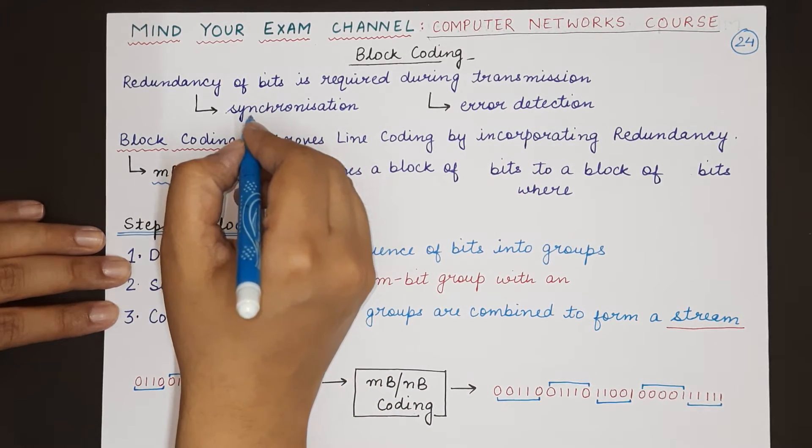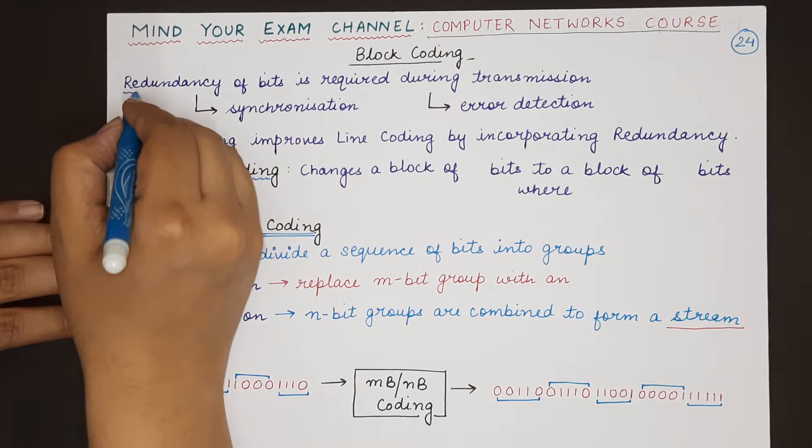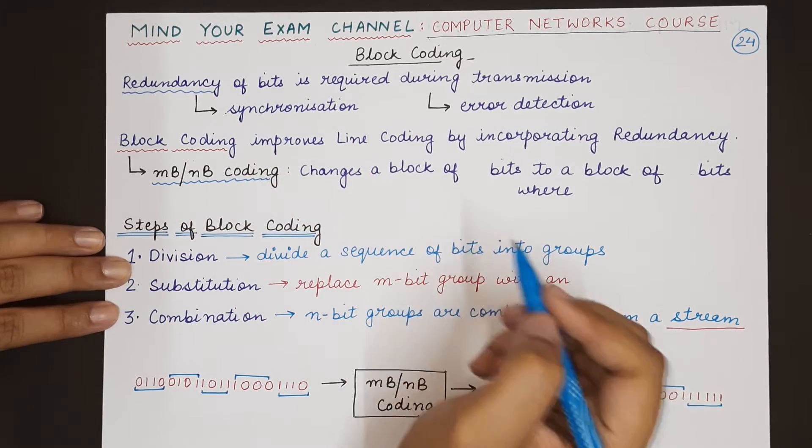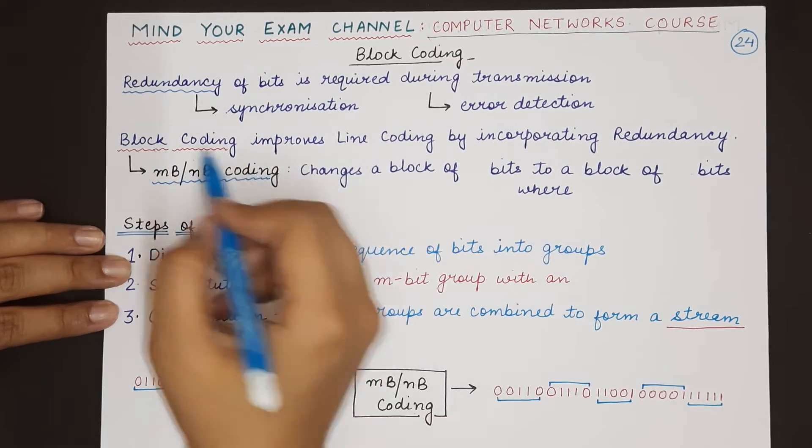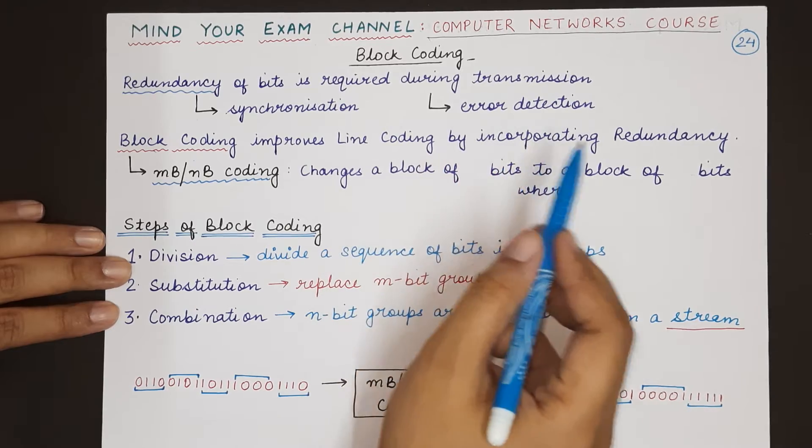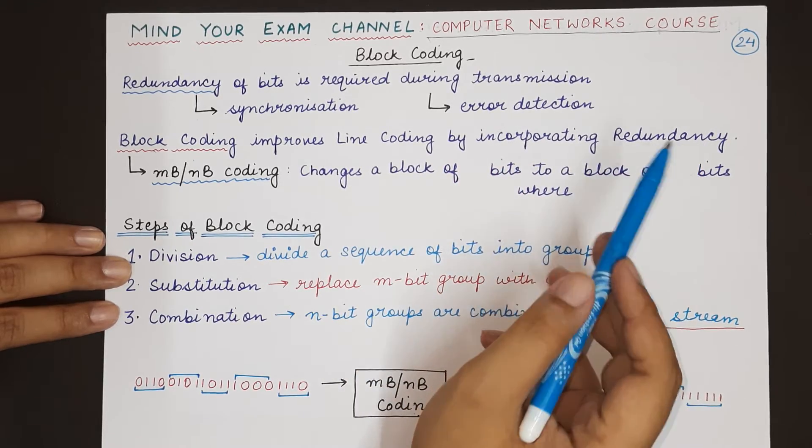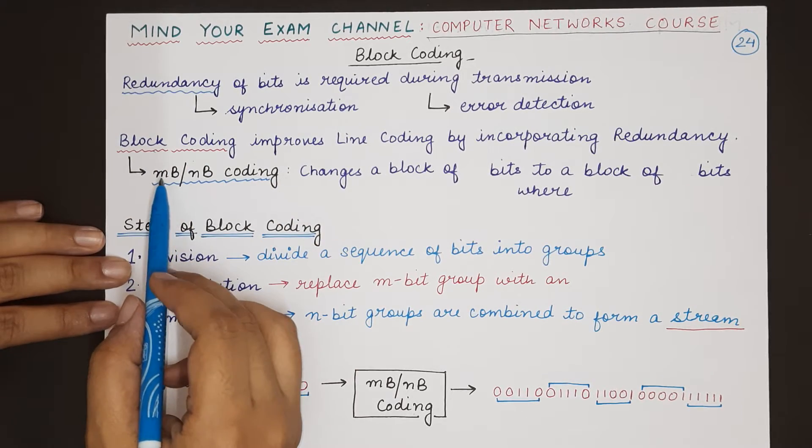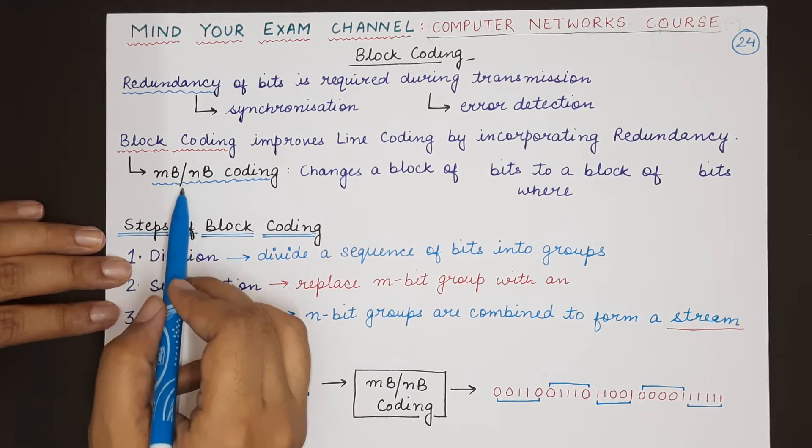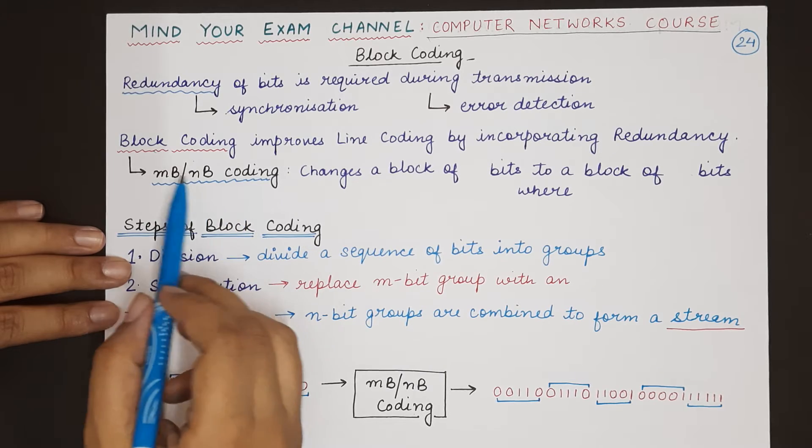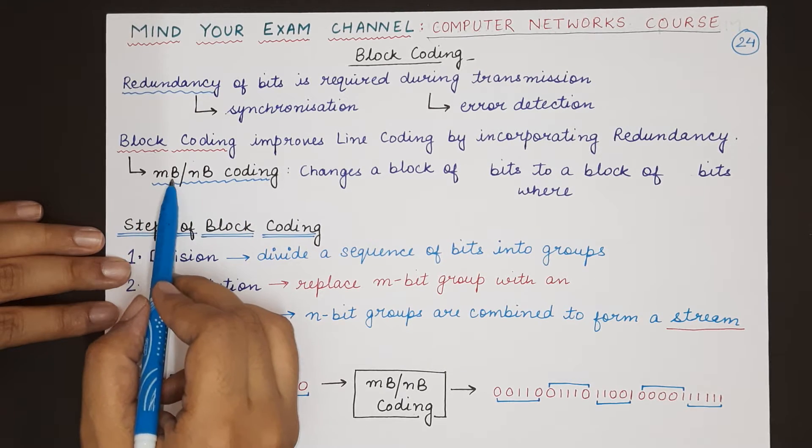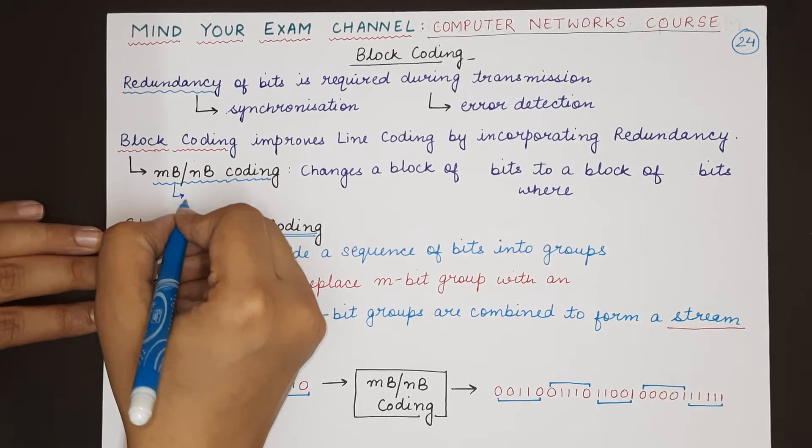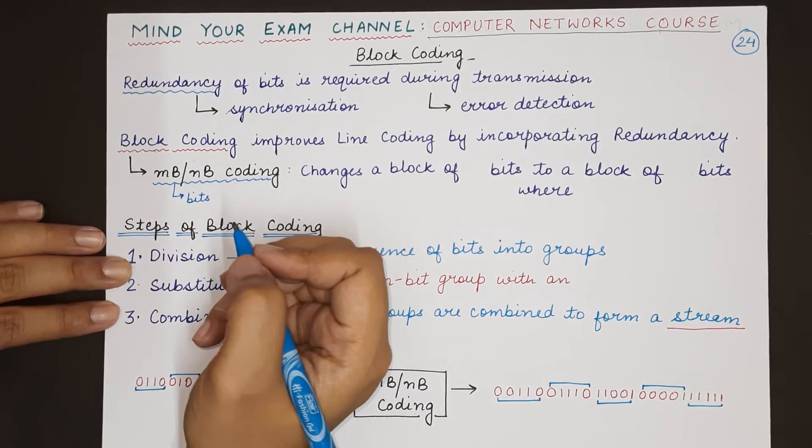Along with transmission of data, we also require synchronization as well as error detection, and both these can be done by introducing some extra bits or redundancy into the data transmission scheme. Block coding improves line coding by incorporating redundancy in terms of bits. Basically, block coding is represented by mB/nB coding.